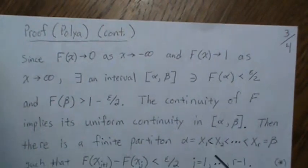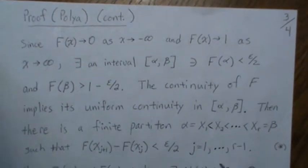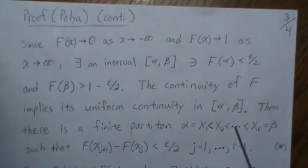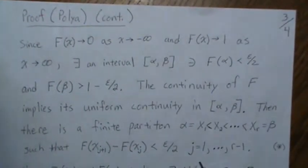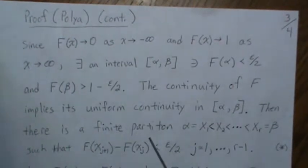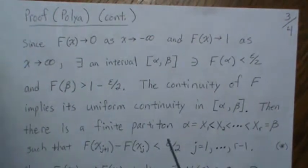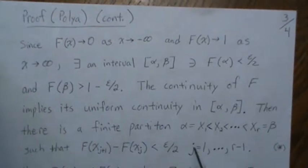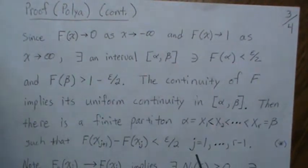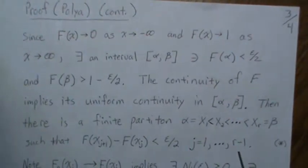The continuity of F implies uniform continuity on the interval [α, β]. That means we can find a finite partition of r points — the lowest being α and the top being β — such that the difference F(x_{j+1}) - F(x_j) is less than ε/2 for all j. Note these partition points are not equally spaced: where the CDF is steep, the points must be much closer together to keep the difference less than ε.